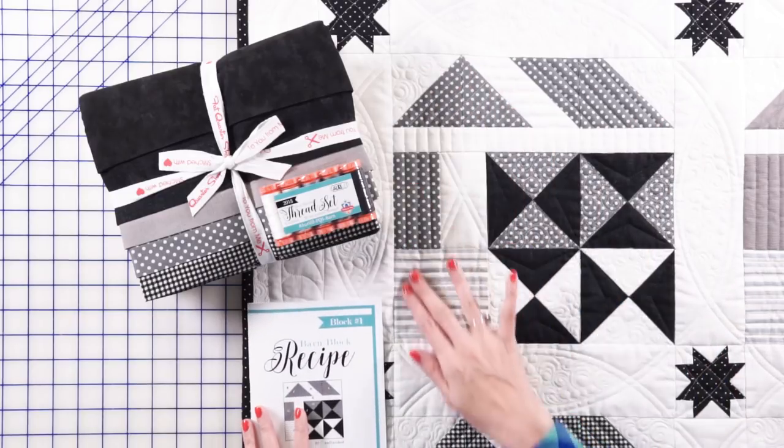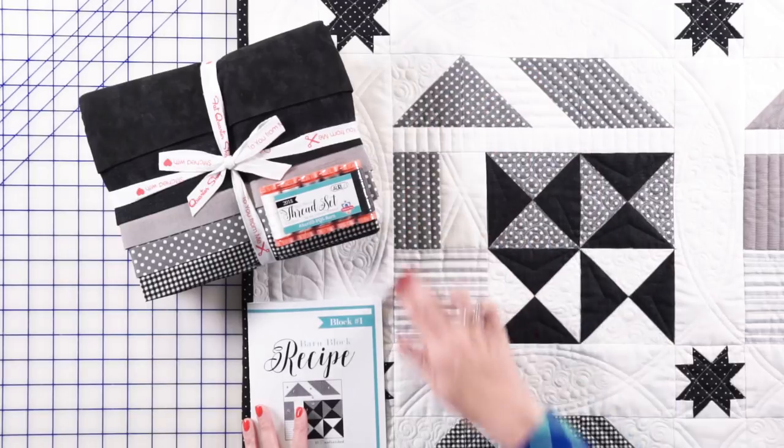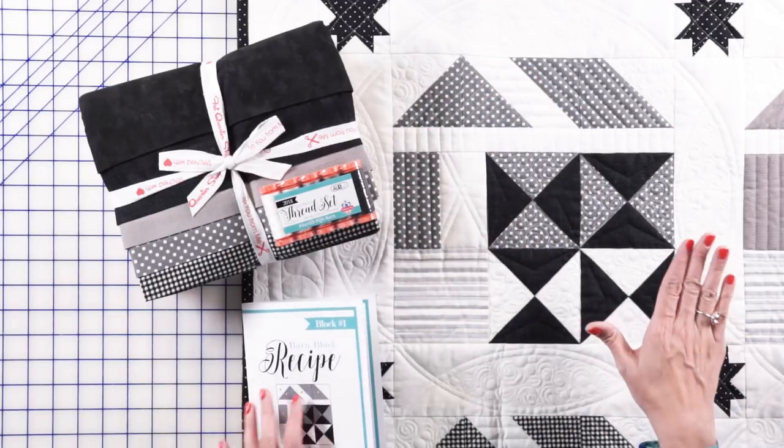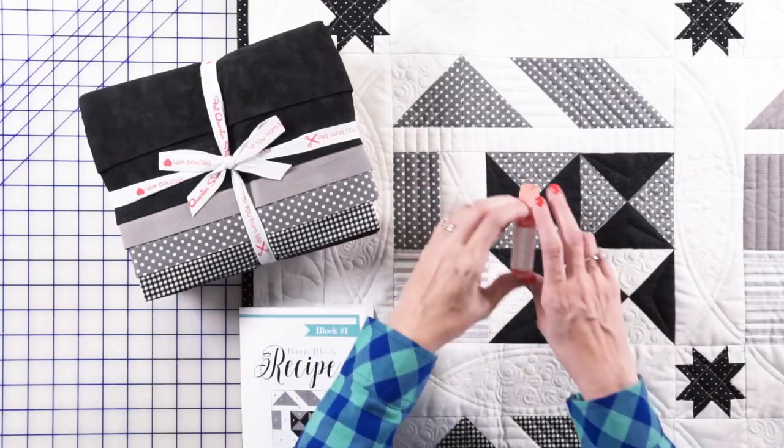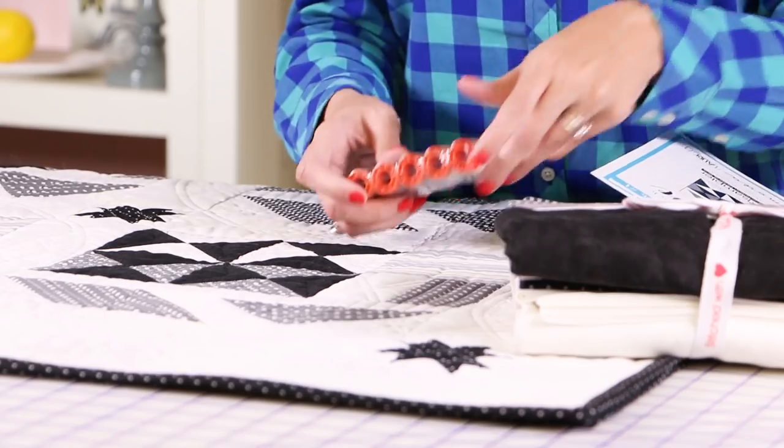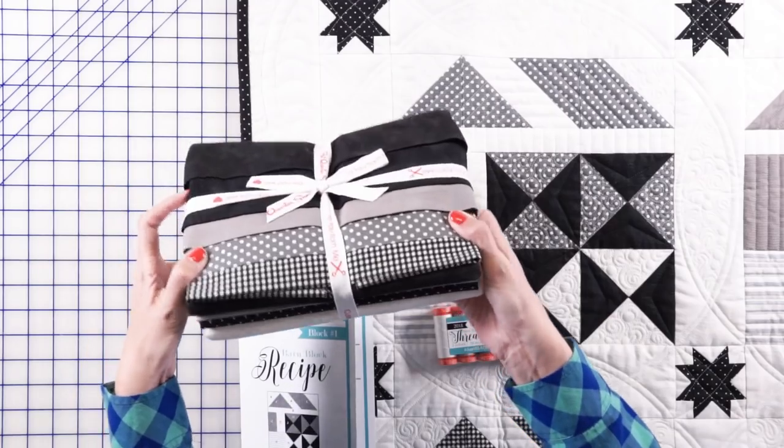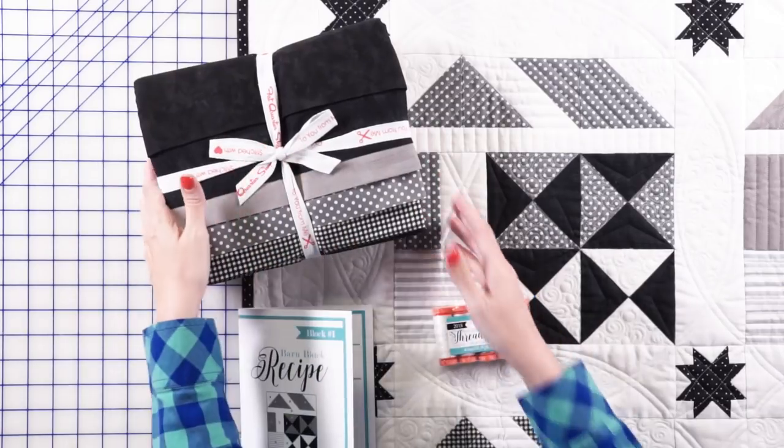So this is our first block. It's called Barn Block, of course, because it looks like a barn block. So this is how wonderful it looks. It's so amazing. We kind of used the inspiration of Joanna Gaines, that whole popular farmhouse look. To go with it, we've also got a thread set that you can use that will do beautiful quilting for you. So we've got that and we've got a quilt kit that has all the fabric you need for the quilt top and binding. So I'm going to walk you through block one so that you can be so excited about this new program.